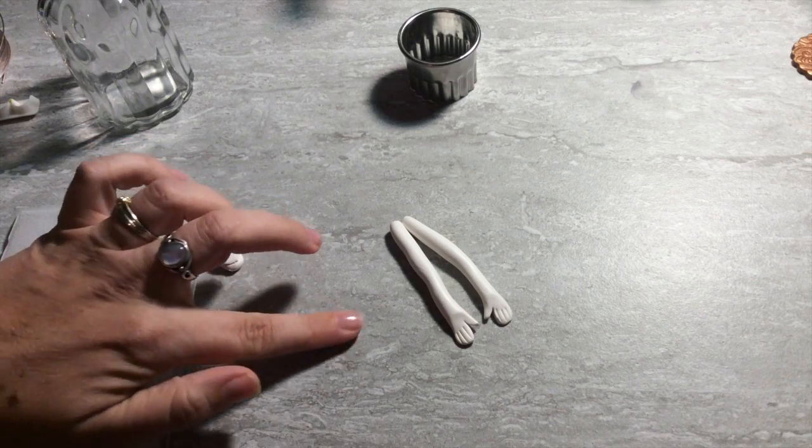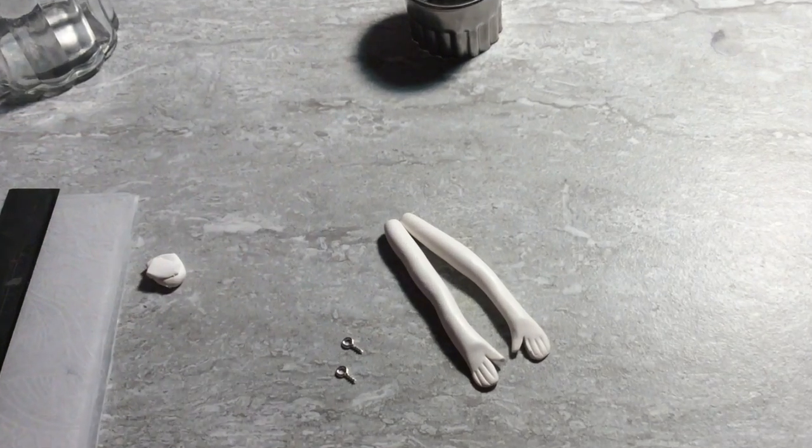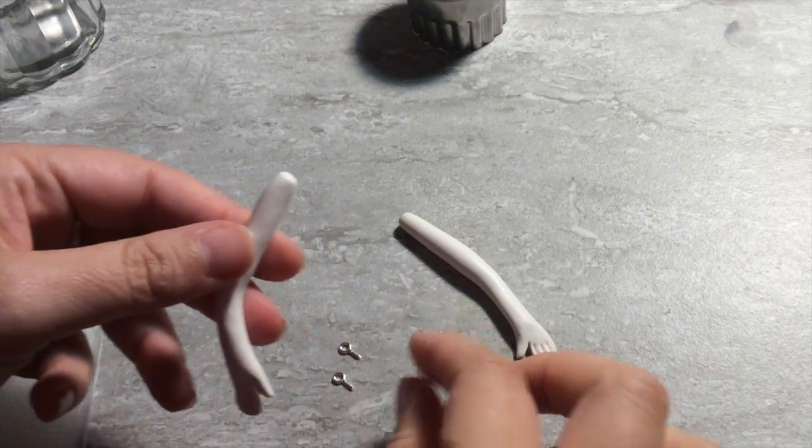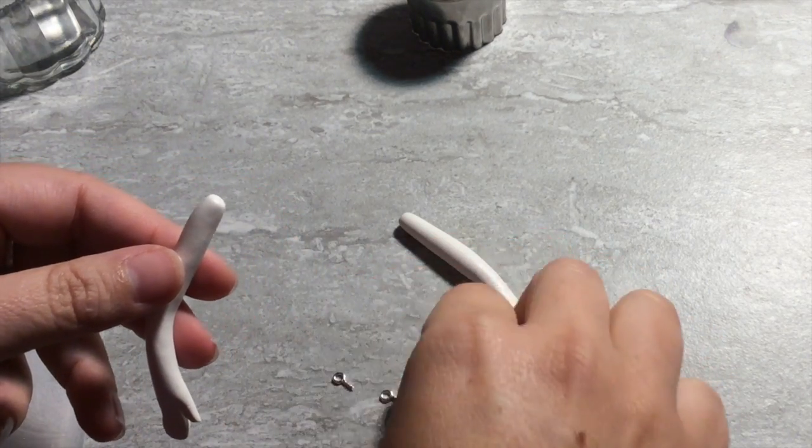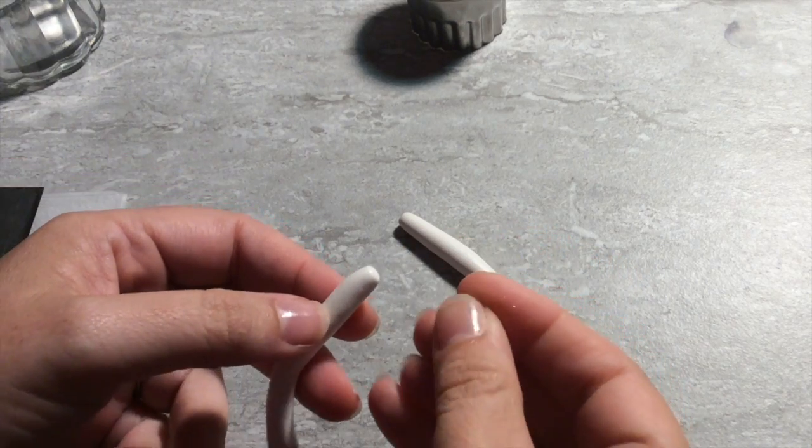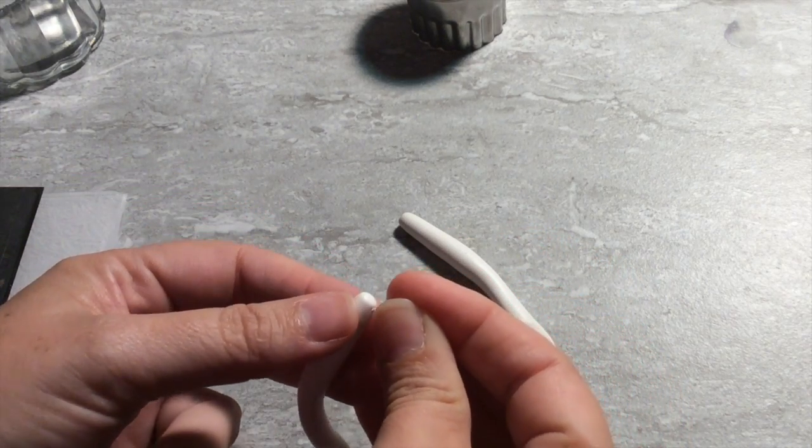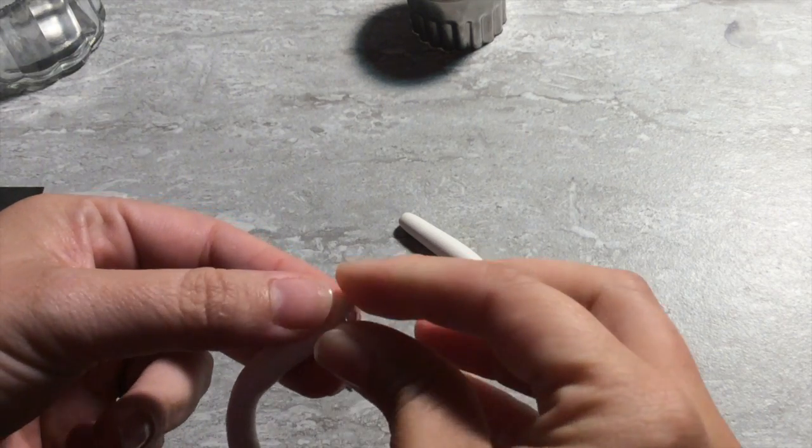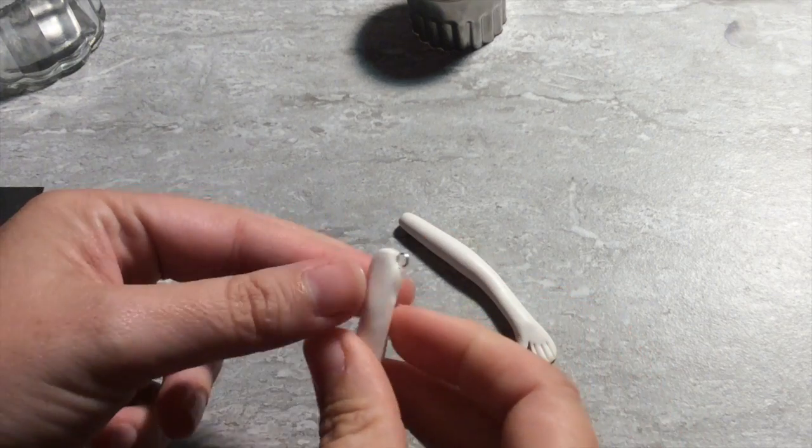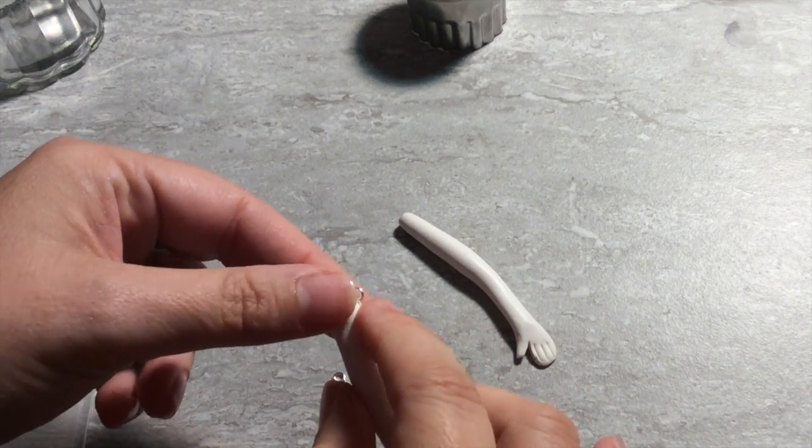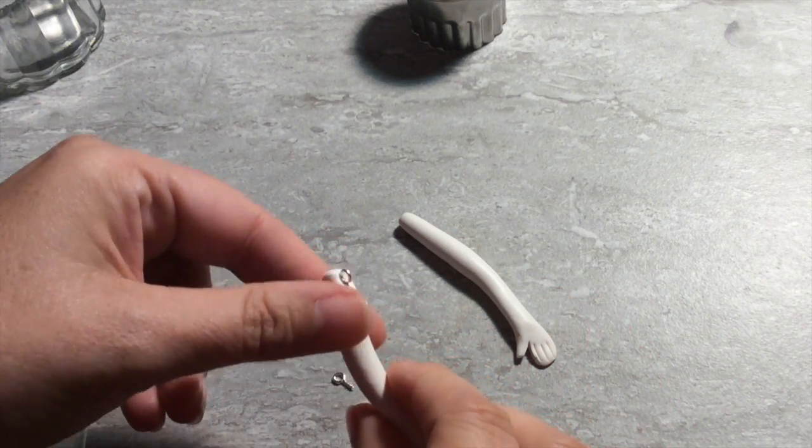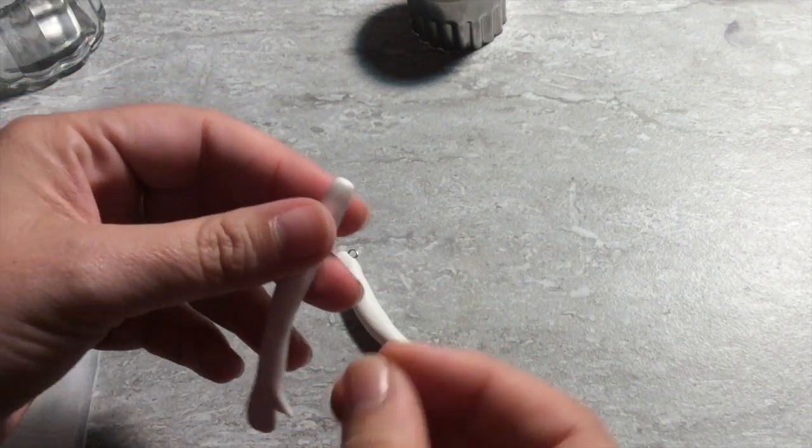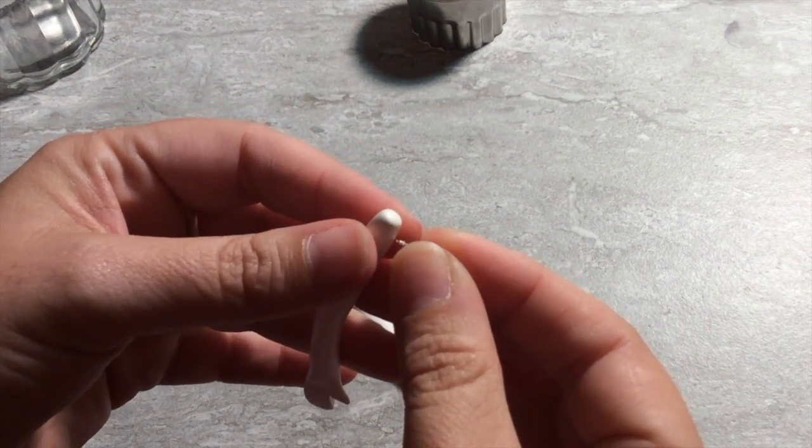Now I have these super cute tiny eye pins. Of course you can just use a loop of wire if you don't have them. But I am going to put them into the top of the arm here by the shoulder. I'm going to kind of smoosh it in. Make sure that the screw eyes, the screw threads are embedded in the arm. Same on the other side.